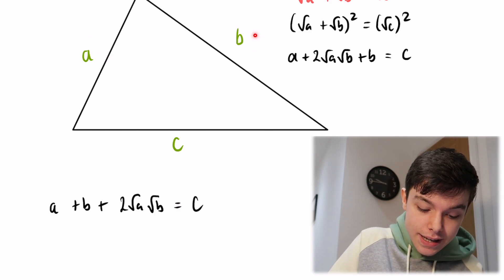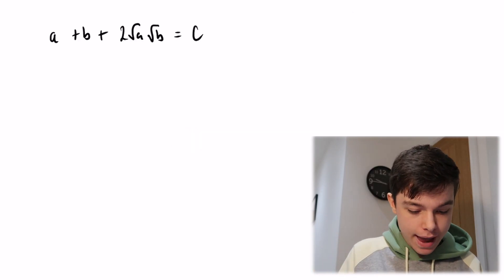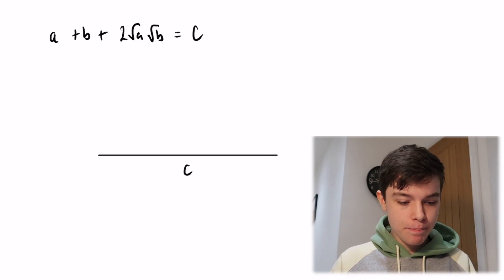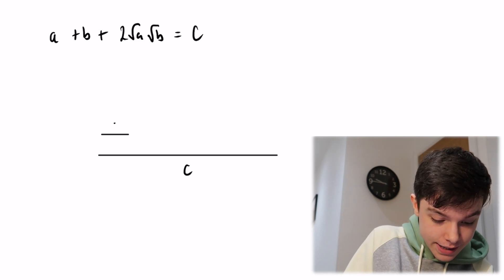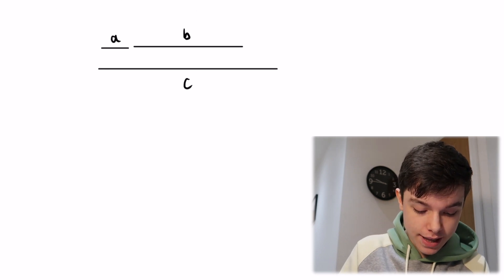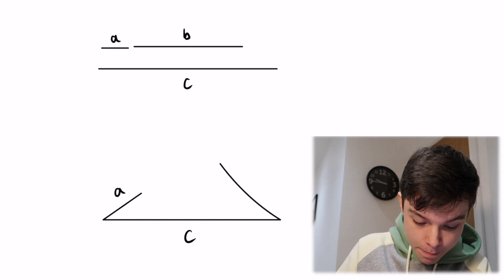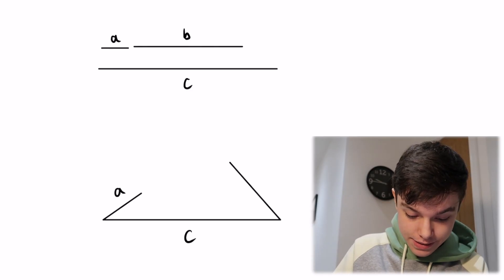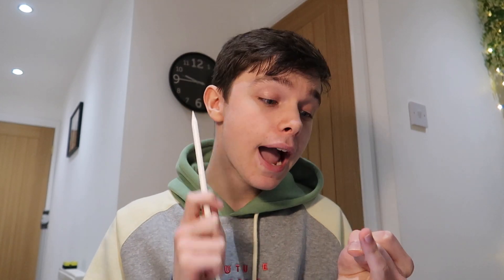So these two sides added together are just a little bit longer than side C. Let's see if we can form a triangle. Here's side C; add on side A and then side B — but C is just a little bit longer than A and B combined, so the sides don't close into a triangle. We can't form a triangle from Homer's theorem for any triangle either. So Homer's theorem doesn't work.